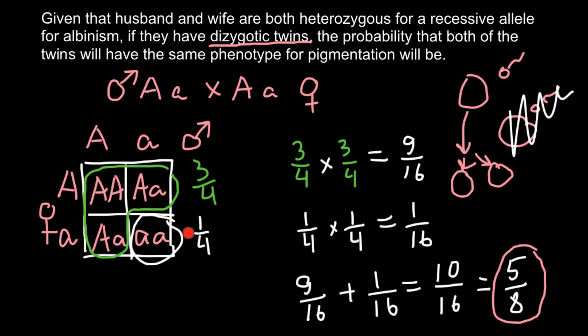For monozygotic twins, we would add three quarters (normal phenotype) to one quarter (albino), giving a probability of 100% — the children would always be the same phenotype because there is no other choice. But for dizygotic twins, it is the same as a couple having two children at different times, for example one sibling born 10 years ago and another born just a few months ago. The probability is exactly the same as for dizygotic twins, because they result from two independent fertilization events.